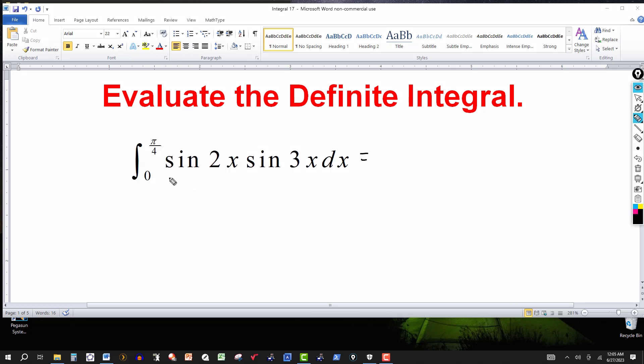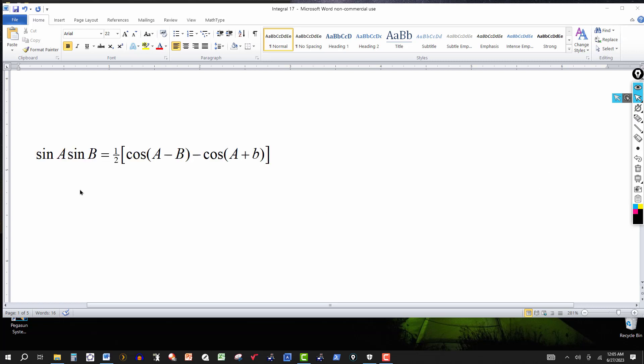The main thing we need to do here first is evaluate this product of sine of 2x and sine of 3x, and this will involve a trig identity going from a product to a sum, and that's this one right here.